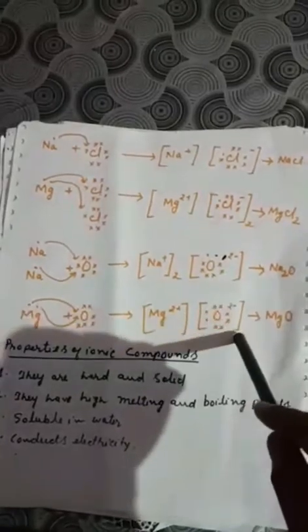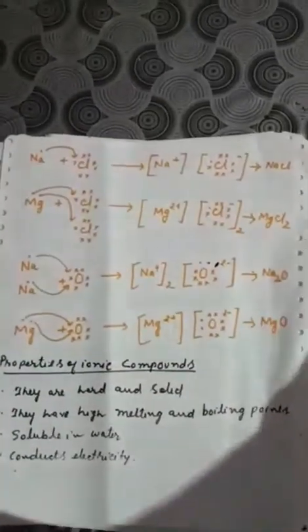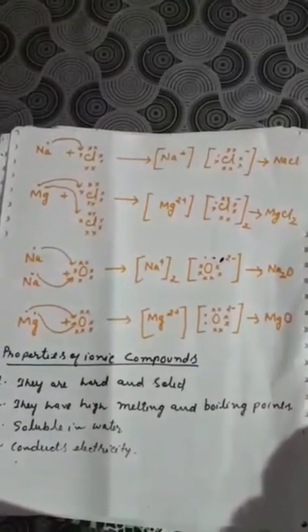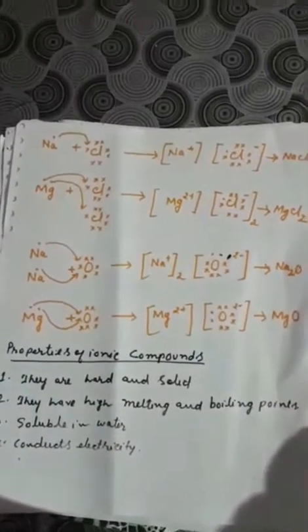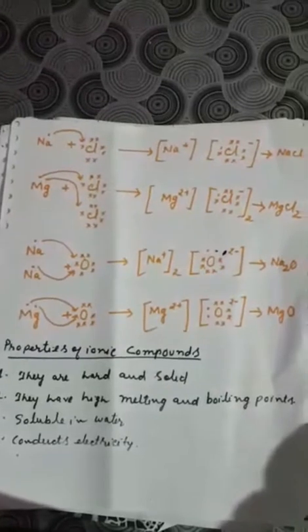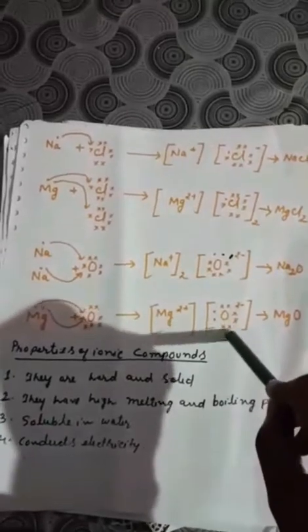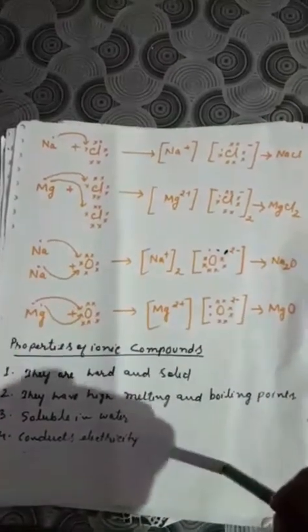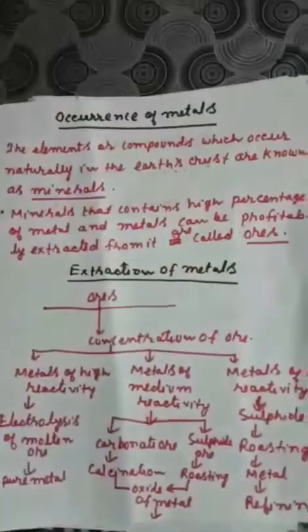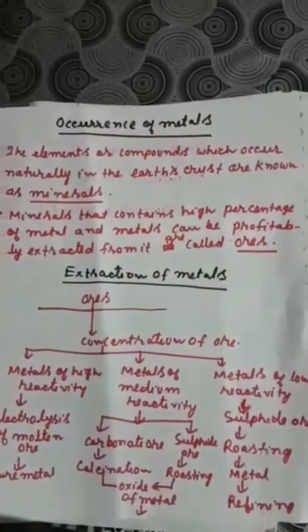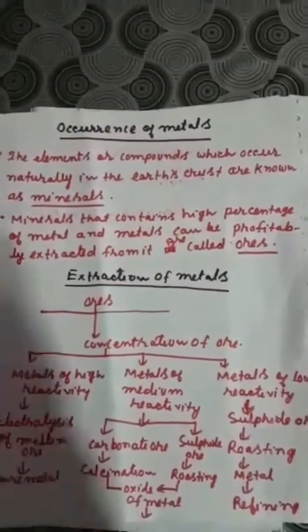Ionic compounds have very high melting and boiling points because there is a strong electrostatic force of attraction between cations and anions, so it takes a large amount of energy to break these bonds. They are soluble in water and can easily produce ions when dissolved in water. They conduct electricity because of the ions they produce in aqueous solution or in the molten state.